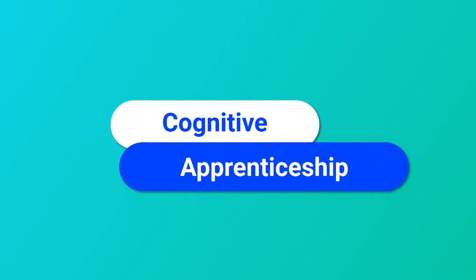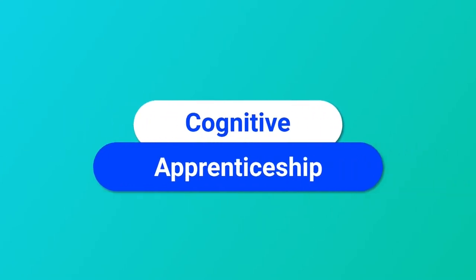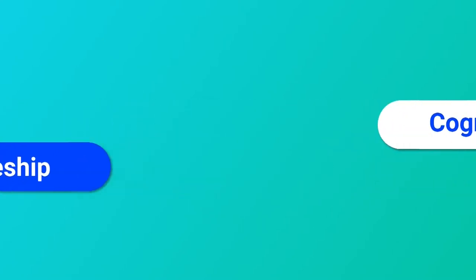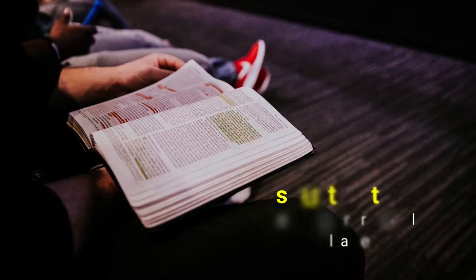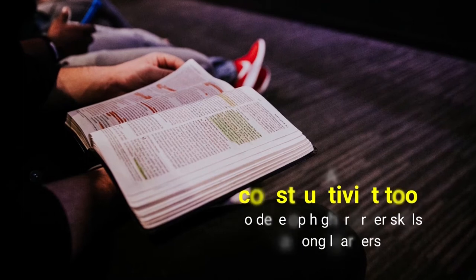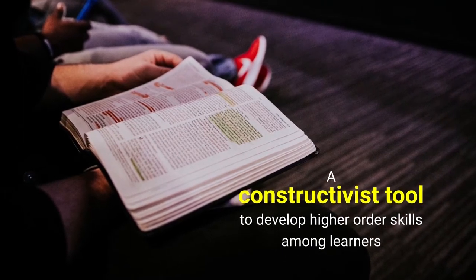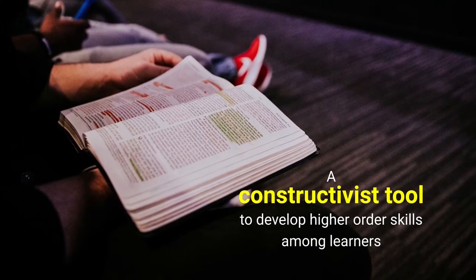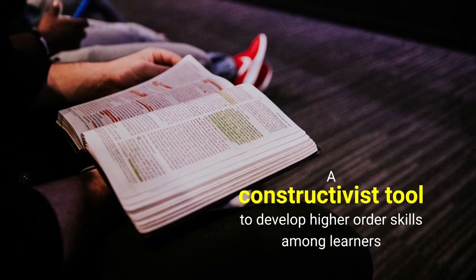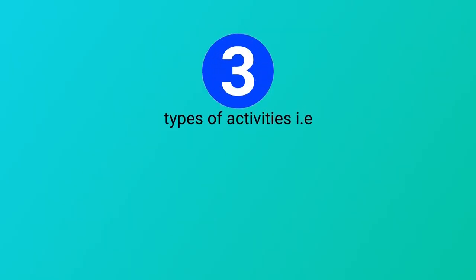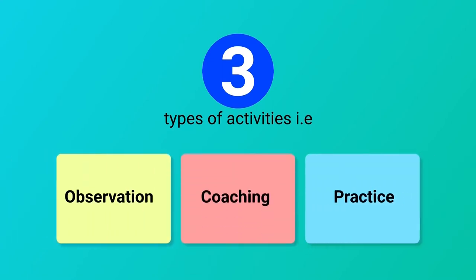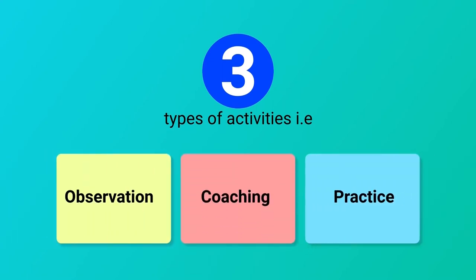Another process is cognitive apprenticeship. Cognitive apprenticeship is used to develop higher-order thinking skills and higher-order skills among learners, and it takes place through three types of activities: observation, coaching, and practice.